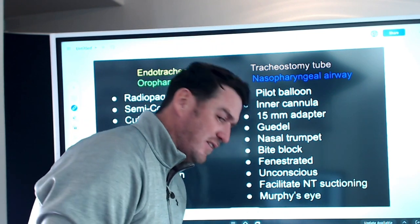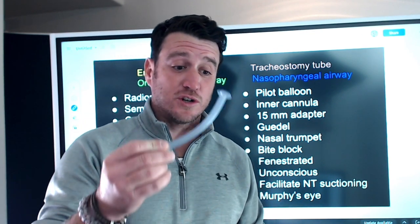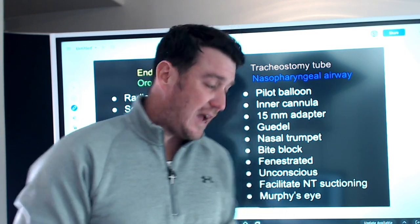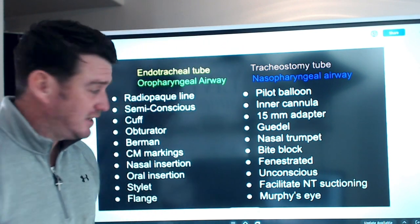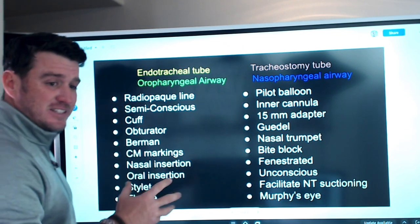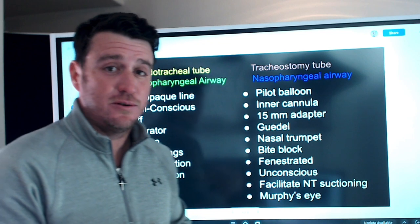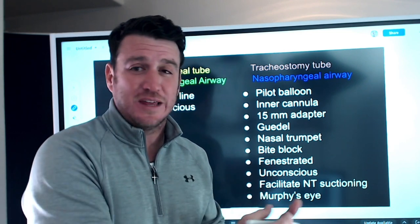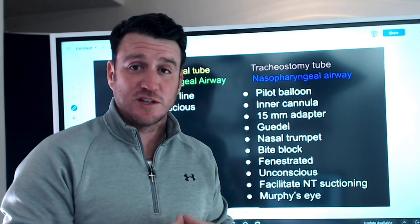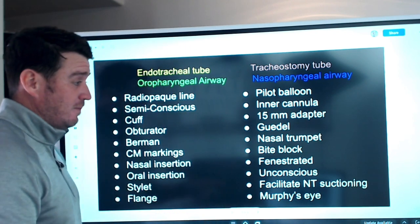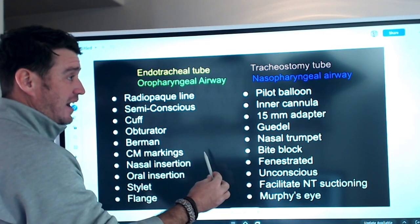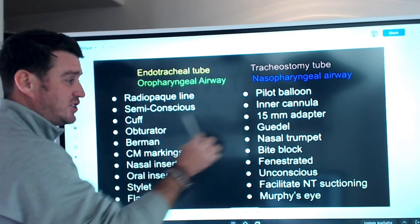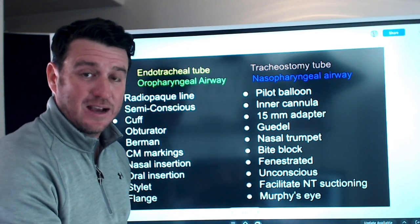Beyond those, we also have the nasopharyngeal airway and the oropharyngeal airway. What I have on the board here is about 20 words, and I want you to do a word association exercise. Pause this video, take these 20 words, and tie them into which of these four artificial airways they go with. Come back when you're done and we'll talk about it.